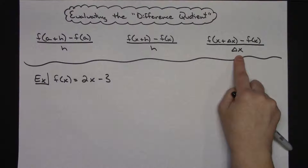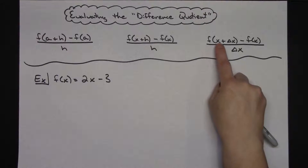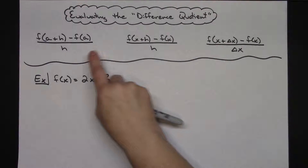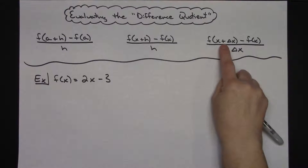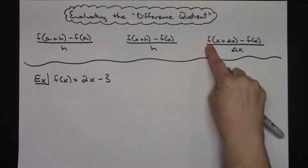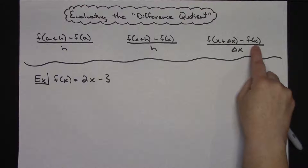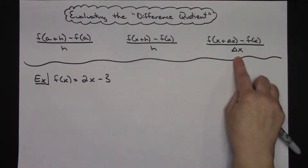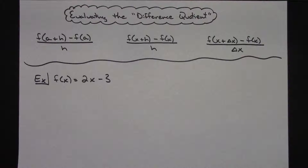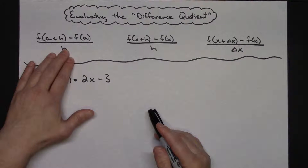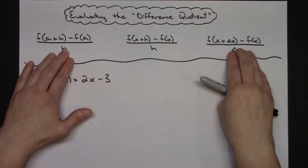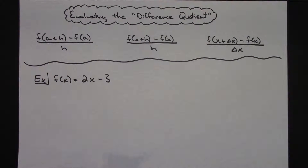This last formula is probably closer to what would be used in an early calculus book: f of x plus delta x. Delta x is just like h or a — it represents a value. So here you take x plus delta x, plug it into the function, subtract the function itself, and divide by delta x. We'll work out a couple of examples, using the first formula on the first example and the third formula on the last, to show that they are all done the same way.